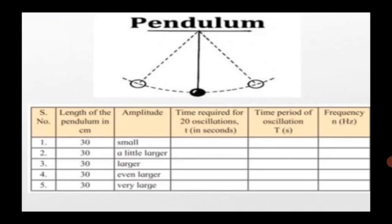In this activity we don't have to change the length of the pendulum, only the amplitude will be varying. In the table you can see length of the pendulum in centimeters is fixed at 30, but the amplitude is varying: small, a little large, larger, even larger, and very large. Record the time required for 20 oscillations.